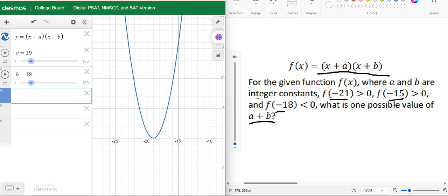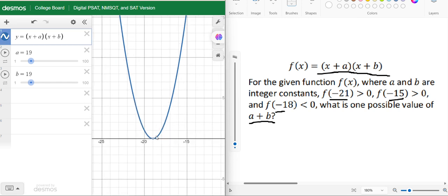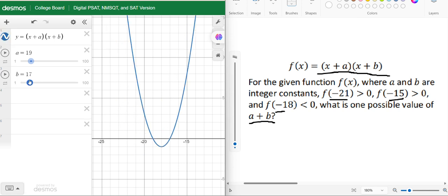Yes, f(-15) is somewhere here and it is also positive. So our a plus b becomes 36. We have to see for f(-18) less than zero, that means f(-18) is somewhere here. So we have to make it less than zero like this.